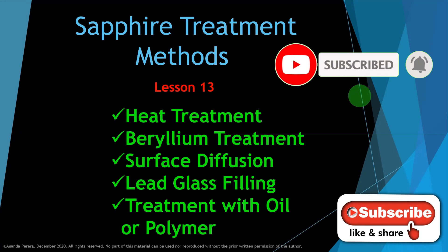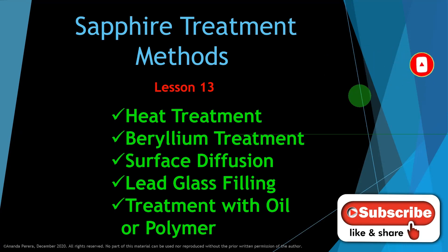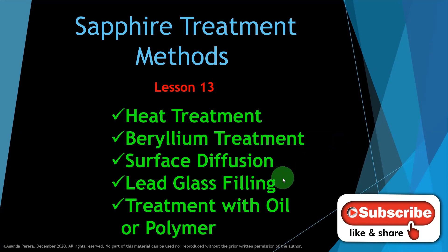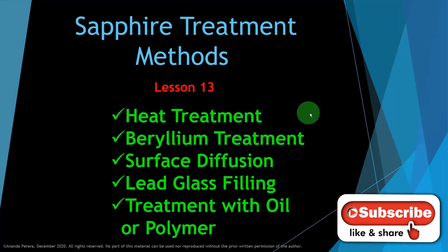Hi everyone, I am Anandapirra from Sapphire Kingdom Gemology. This is our lesson number 13. We are discussing sapphire treatment methods. There are several methods: heat treatment, beryllium treatment, surface diffusion, lead glass filling, and treatment with oil or polymer. In some cases, some treatments are illegal and some are legal, so you should know this very well.